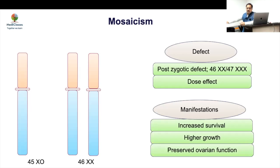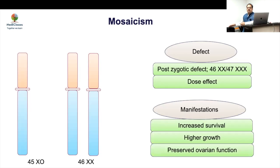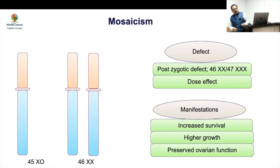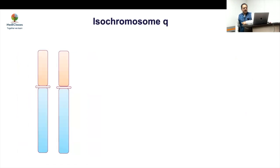Girls with mosaic Turner syndrome are often those who present with spontaneous breast development, spontaneous menarche, and rarely even pregnancy. It's not just the severity of the defect but the extent — how many cells are affected — that is important. Always look at the mosaicism details in the karyotype, as this gives important clinical clues.